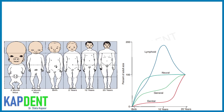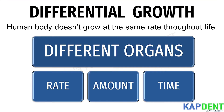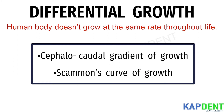Hello everyone. In today's session we will learn about a concept or normal feature of growth which is differential growth, along with Scammon's growth curve and the cephalocaudal gradient of growth. Differential growth means that the human body does not grow at the same rate throughout life. Different organs grow at different rates, to different amounts, and at different times — and this concept is well explained by the cephalocaudal gradient and Scammon's growth curve.